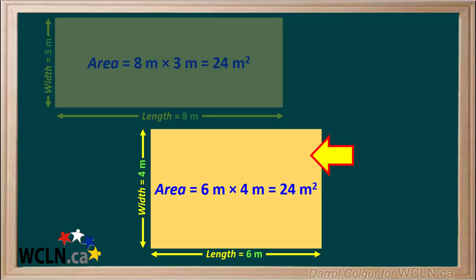Whereas this rectangle has a length of 6 meters and a width of 4 meters. The area is 6 meters times 4 meters, which is also equal to 24 meters squared.